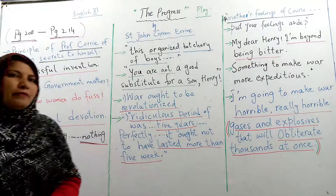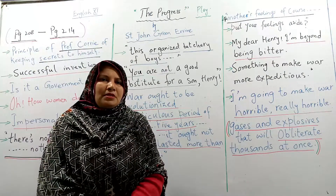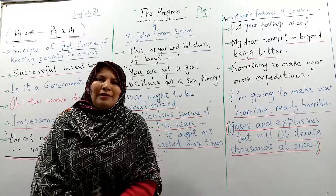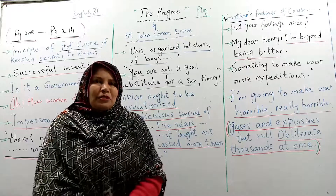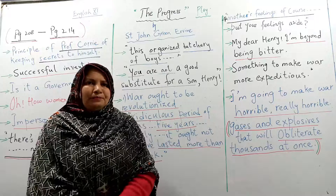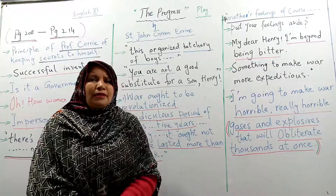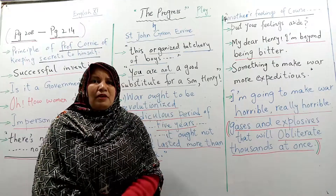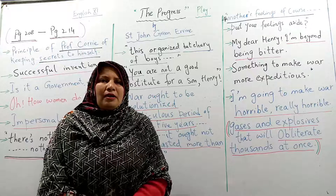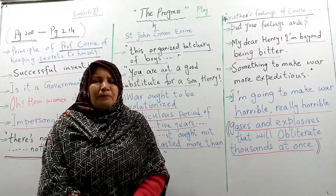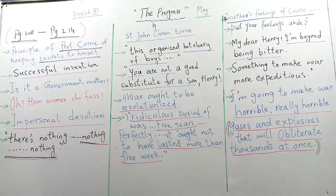Mrs. Meldon asks Hannah: 'Has everything been alright?' Hannah confirms yes, and mentions that the gardener Gage brought up the wreath she ordered for the war memorial, and it is in the kitchen. Hannah asks if she should fetch it. This shows that Mrs. Meldon had ordered a war memorial wreath. As discussed earlier, Mrs. Meldon's only son Eddie lost his precious life in the war, and she has ordered this memorial wreath in his memory.